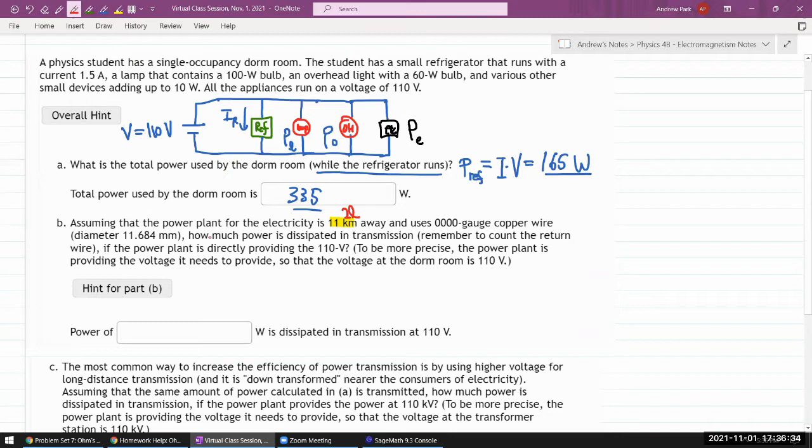How much power is dissipated in transmission if the power plant is directly providing the 110 volts? You have to be careful here. So the mistake to make is to, okay, so let's say you calculate the resistance of the copper wire. And if you just blindly use this formula, P is equal to V squared over R, the answer you get there will be wrong. And the reason it's wrong is because the voltage of 110 volts, that's not the voltage drop across the wire. That would be terrible.